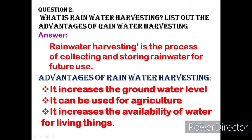Question 2: What is rainwater harvesting? List out the advantages of rainwater harvesting. Answer: Rainwater harvesting is the process of collecting and storing rainwater for future use.